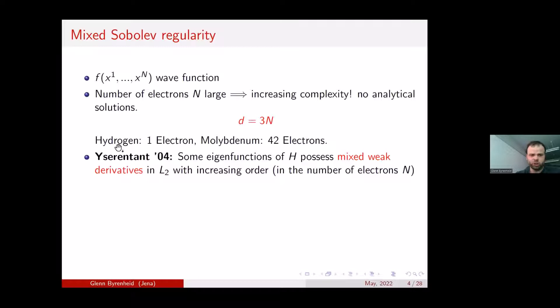In the case of the hydrogen atom, we have only one electron and can hope for some analytic solution of this electronic Schrödinger equation. But in the case of molybdenum, we have 42 electrons, meaning our wave function has dimension 126, and there is no hope for any analytic solution — we have to do approximation theory to approximate something.